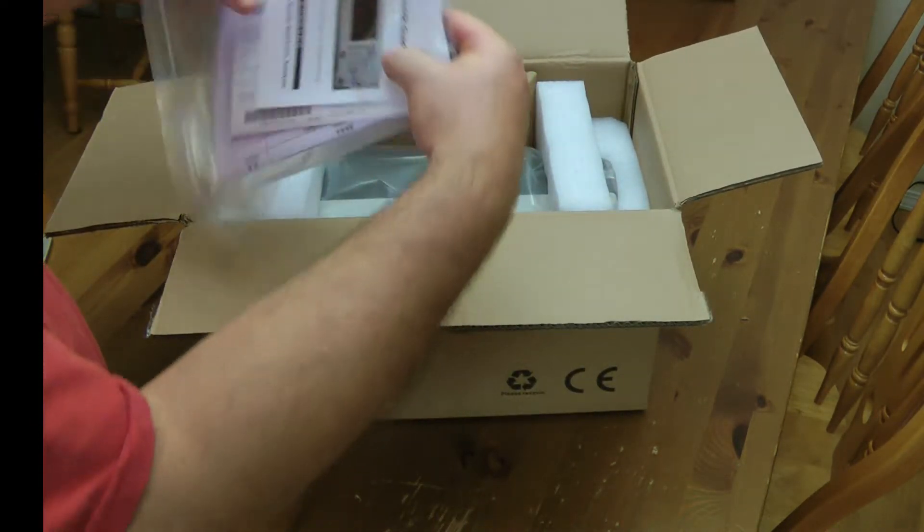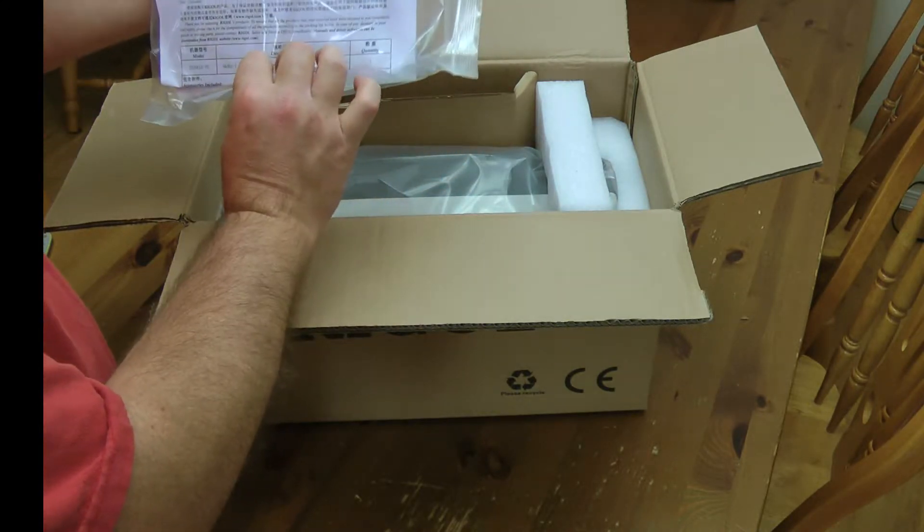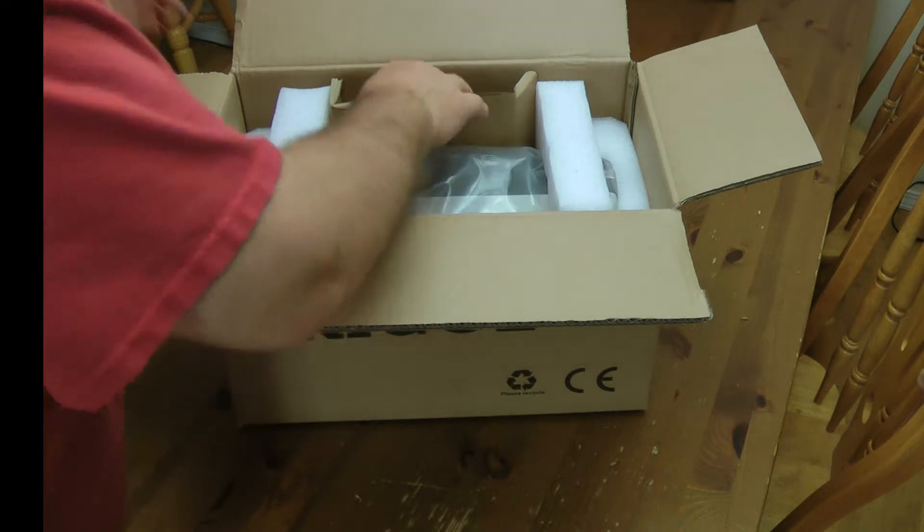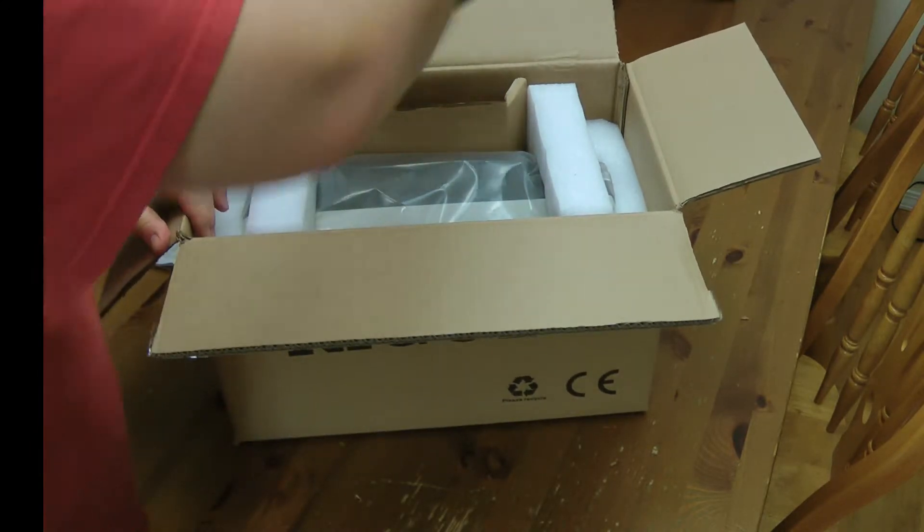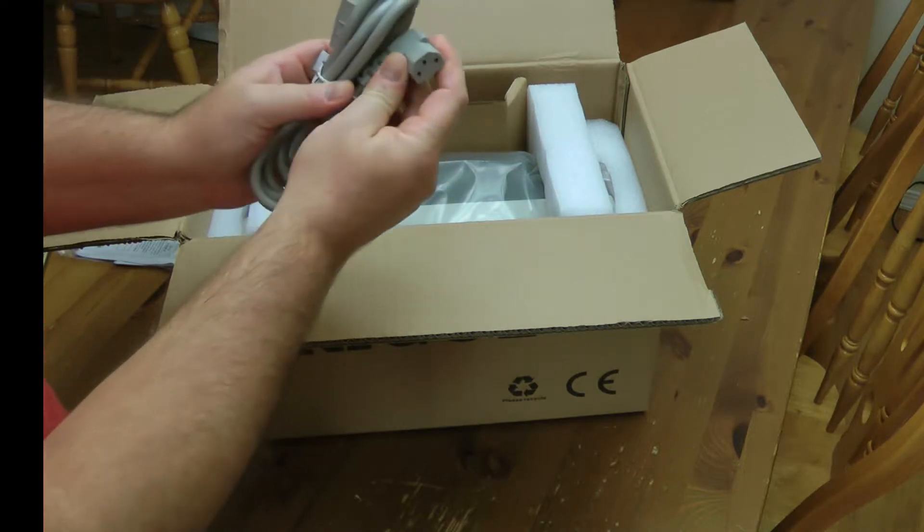Some basic paperwork including a quick guide and a packing list. Chinese, I think. And this is the power cord. Oh, another one. It's an angled connector.